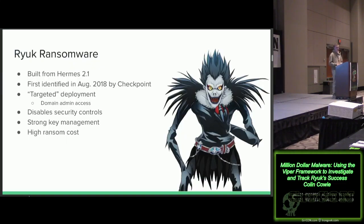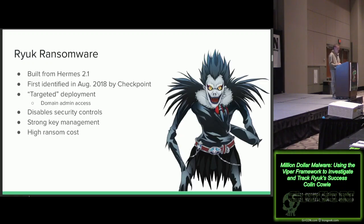Ryuk was actually modified from Hermes 2.1, which was originally used by the Lazarus Group, attributed to North Korea. However, it is not North Koreans who created Ryuk. When Checkpoint first identified it in August 2018, many assumed North Korean origin, but a few months later CrowdStrike and FireEye came out and said that was completely wrong — this is typical cybercrime groups. They wait until they've achieved domain administrator access, disable security controls and antivirus, then encrypt everything using strong encryption, and oftentimes they get paid.